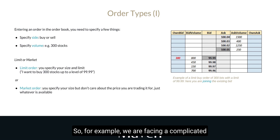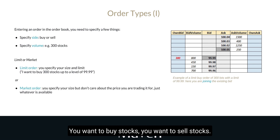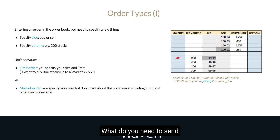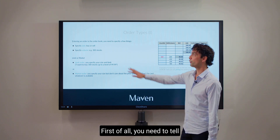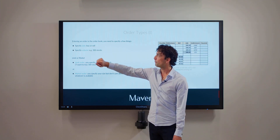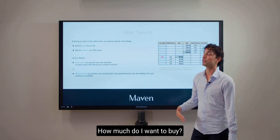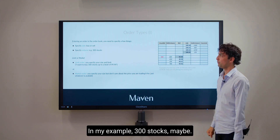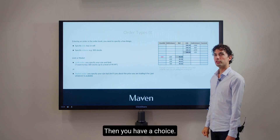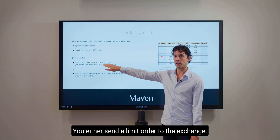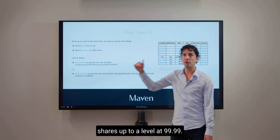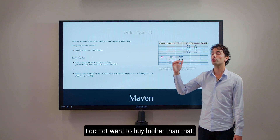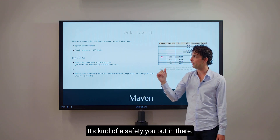For example, we are facing a complicated order book and you are entering an order — you want to buy stocks or you want to sell stocks. What do you need to send to the platform, to the exchange? You need to send a couple of specifications. First of all, you need to tell: do I want to buy or sell? Then you need to specify volume — how much do I want to buy? In my example, 300 stocks maybe. Then you have a choice: you either send a limit order to the exchange. For example, I want to buy 300 shares up to a level at $99.99 — I do not want to buy higher than that. It's a kind of safety you put in there.